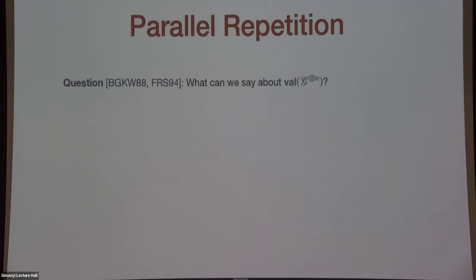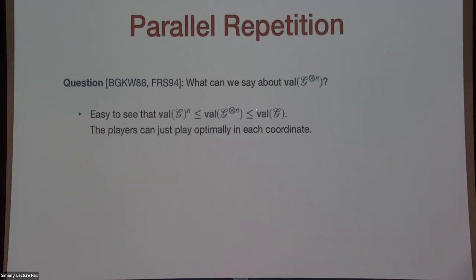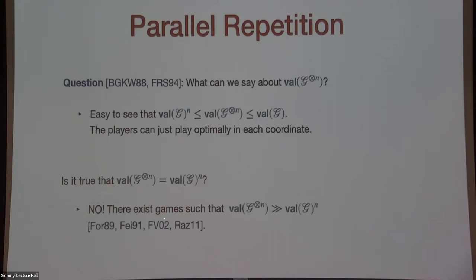A natural question is: what can we say about the value of the repeated game G to the n? It is easy to see that the value of G to the n is at least the value of G raised to the power n — just use the same strategy in each coordinate independently. It is also at most value(G)^n because to win n copies you must win every one. The question is whether these two quantities are equal, but it turns out they are not — there are games where the value of G to the n is much larger than value(G)^n.